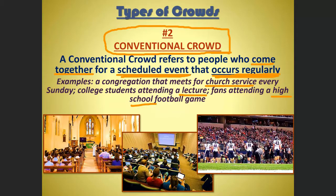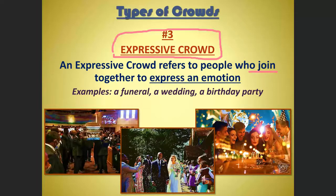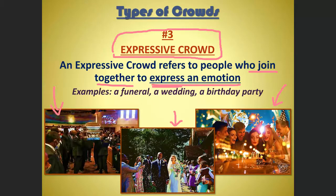Number three is an expressive crowd — when people come together to express an emotion. The keyword is 'express.' Anytime people gather to celebrate like at a birthday or wedding, or to grieve together at a funeral or commemoration — anytime people come together specifically to express some sort of shared emotion about an event.